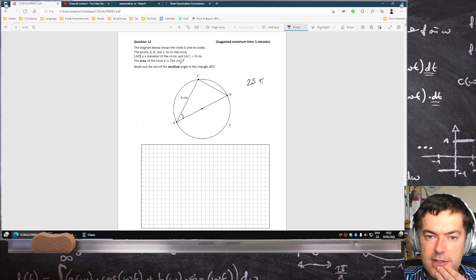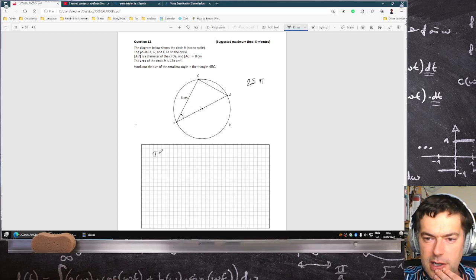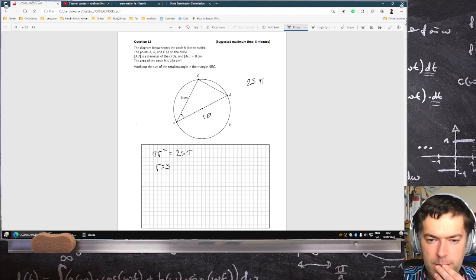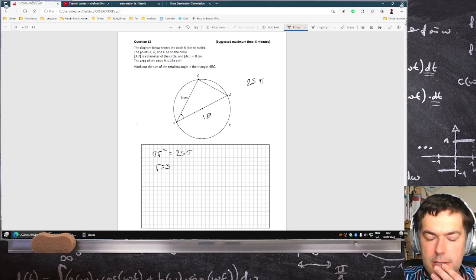Okay, the area of the circle is 25π, so you have πr² equals 25π, so that means the radius is 5, so that's 10. So that's 5 and that's 5.